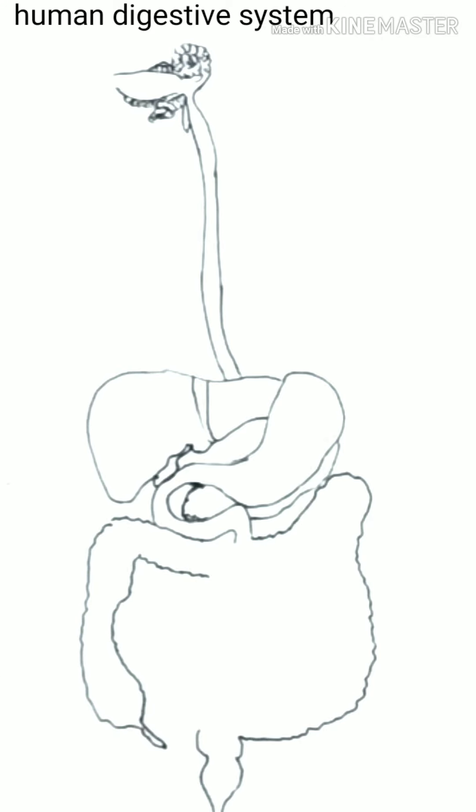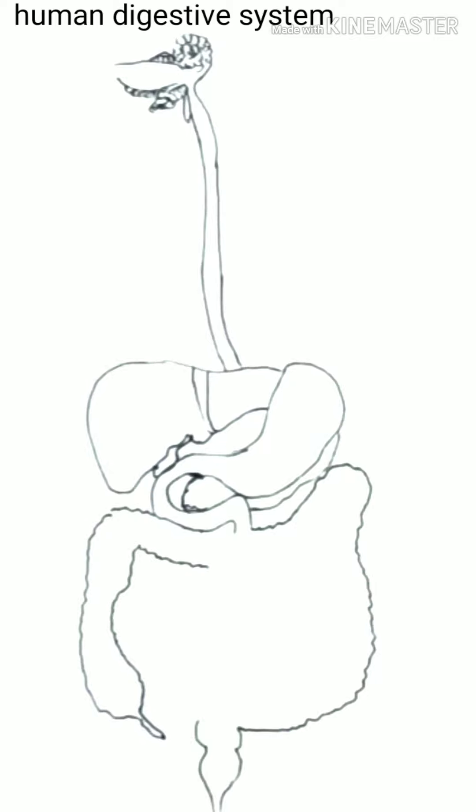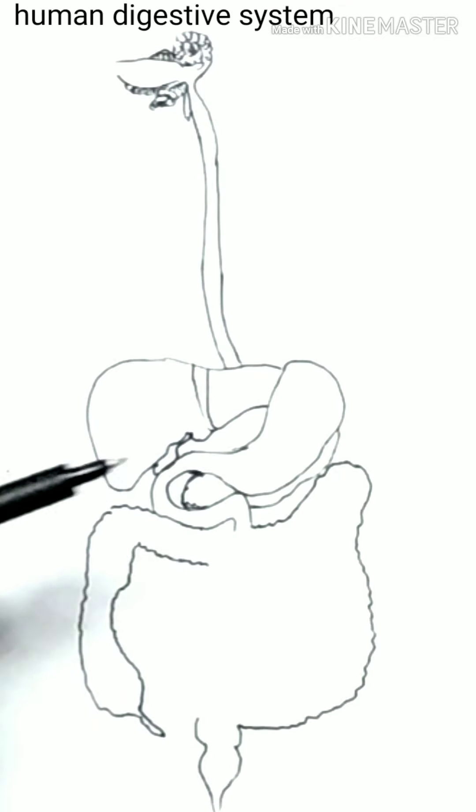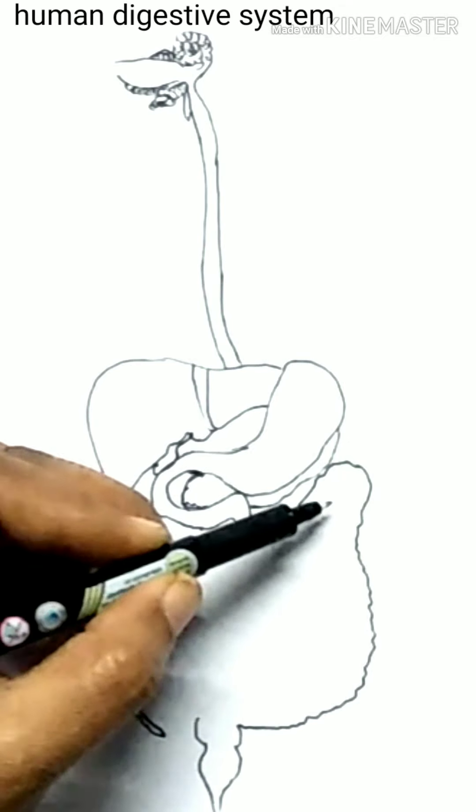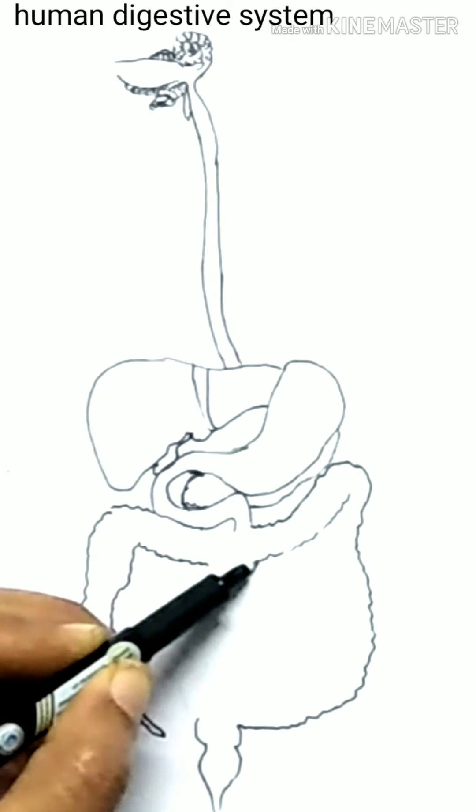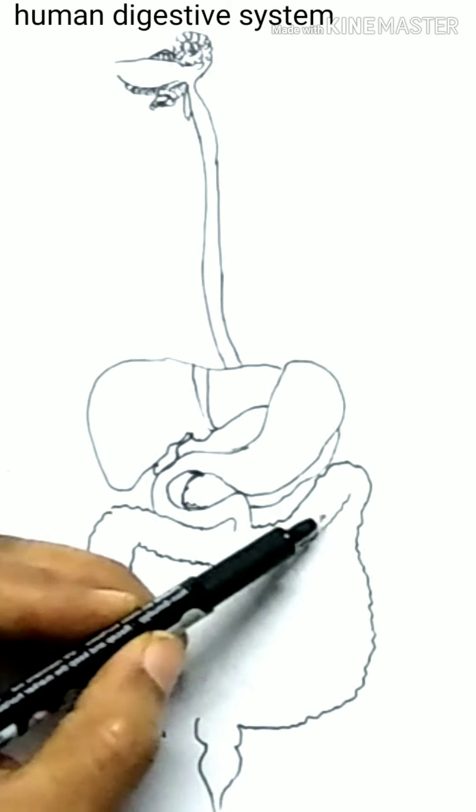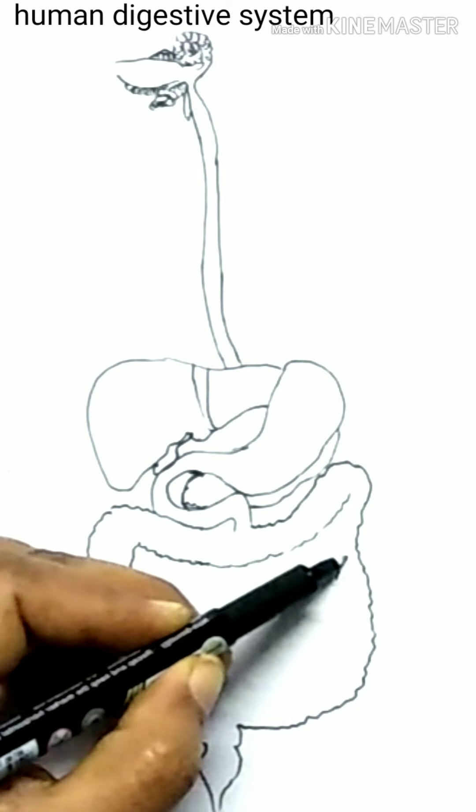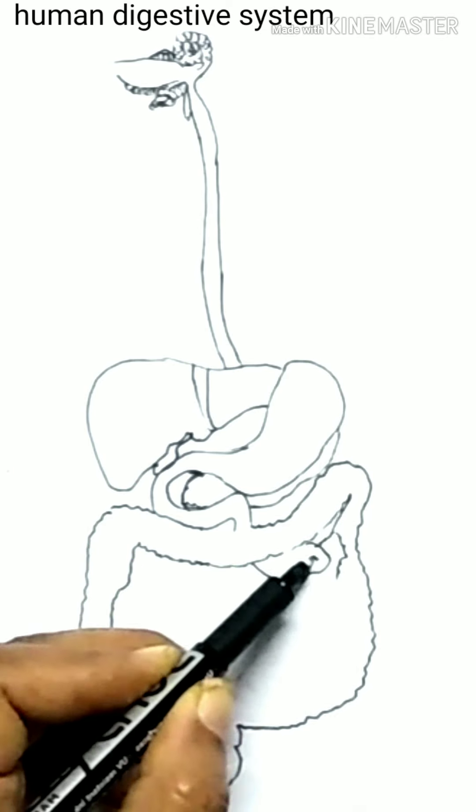Pancreas has enzymes that help in total digestion of all food components. Pancreas, the digestive tract and associated glands together constitute the digestive system.